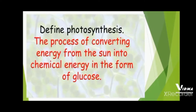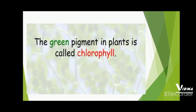Photosynthesis is the process of converting energy from the sun into chemical energy in the form of glucose — that is the making of food for the plant. This is done by the green pigment called chlorophyll, which is present in the chloroplast of the leaves.